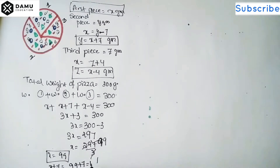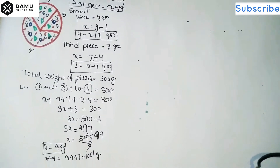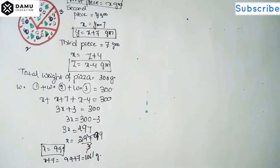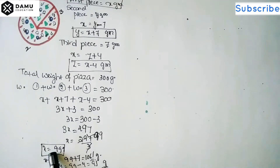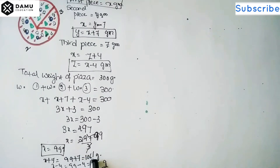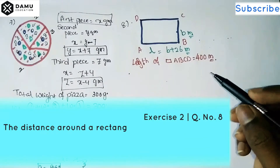So 99 plus 7 equals 106 grams. Then x minus 4 gives 99 minus 4, which equals 95 grams. So the first piece weight is 99 grams, the second piece weight is 106 grams, and the third piece weight is 95 grams. Thanks for watching.